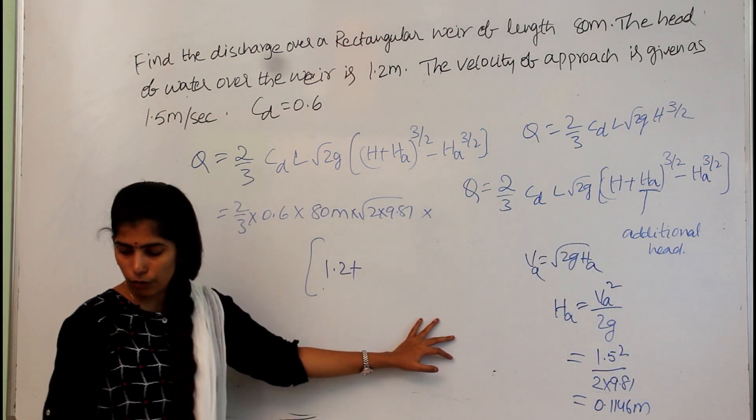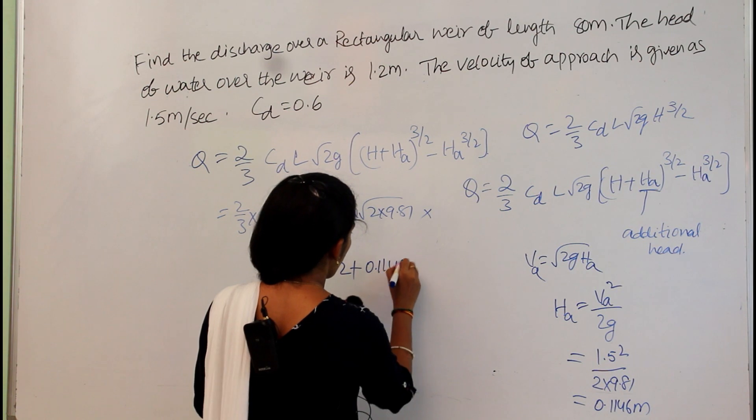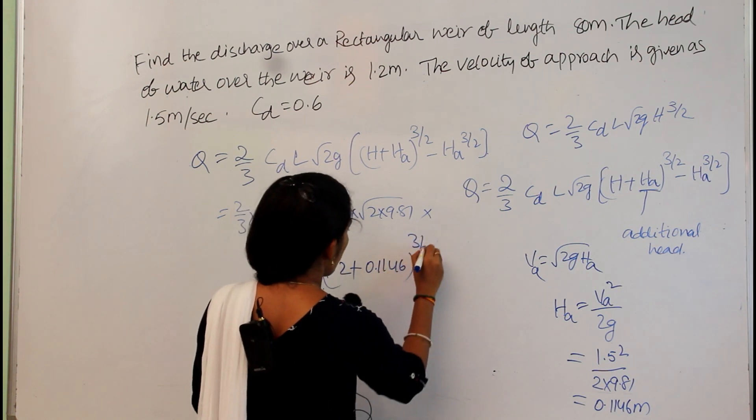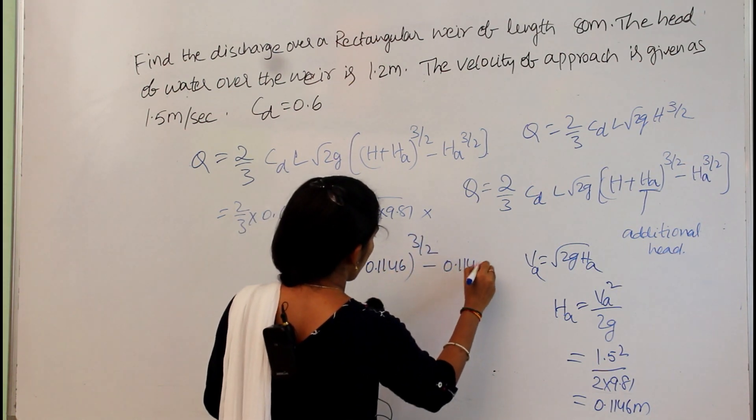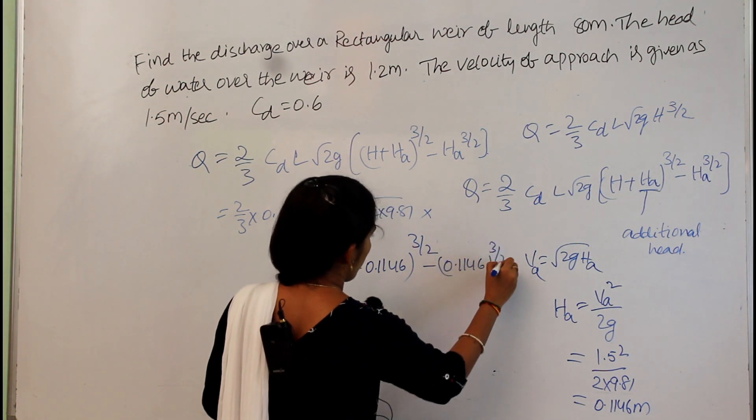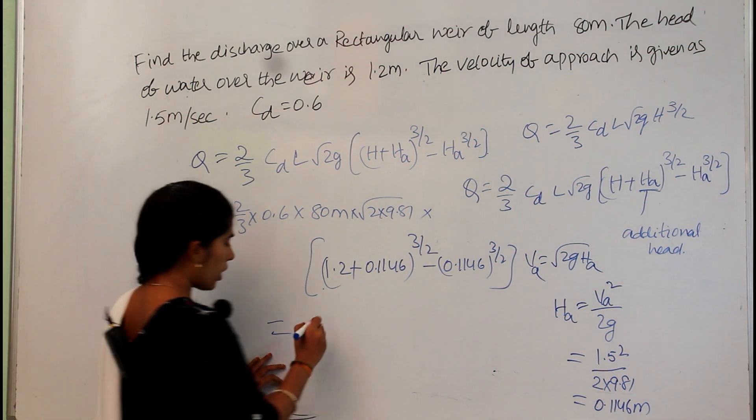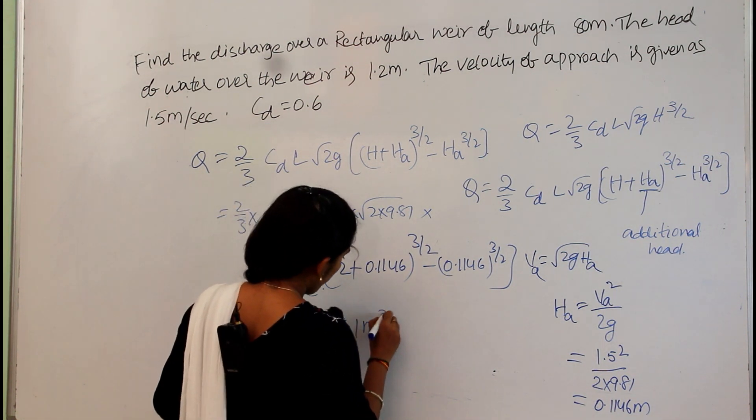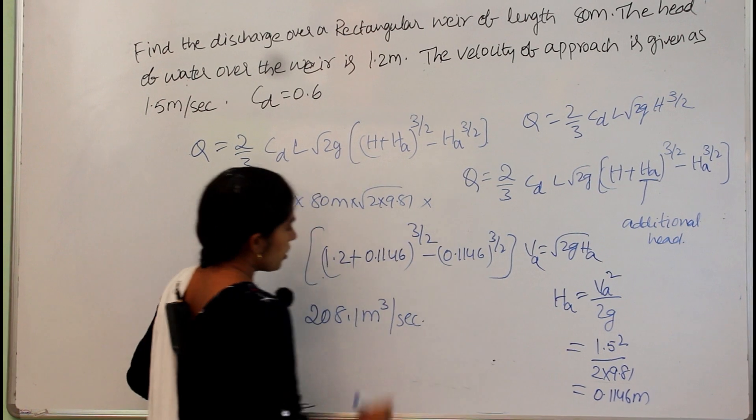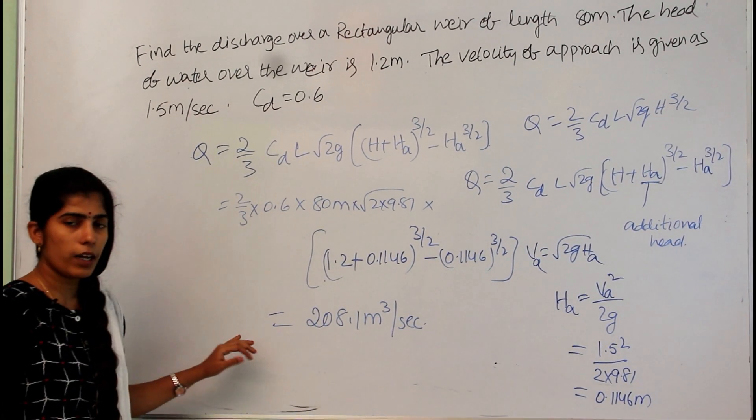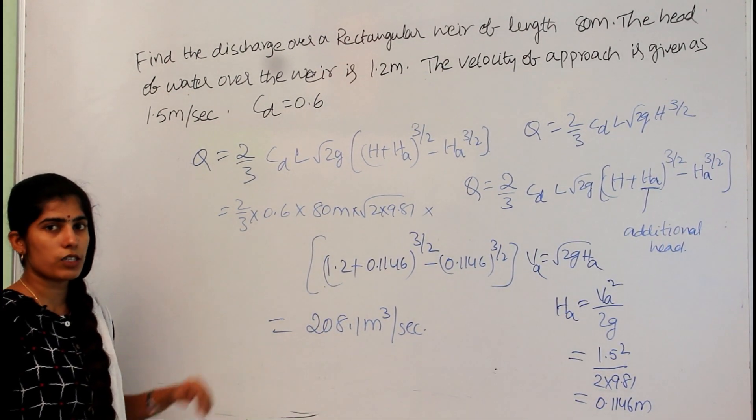This value we have to keep here: 0.1146 whole power 3/2 minus 0.1146 whole power 3/2. By solving this we get a value of 208.1 meter cube per second. This is the total discharge from the rectangular weir with velocity approach.